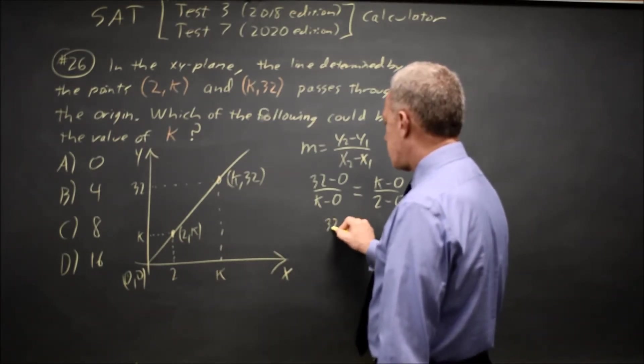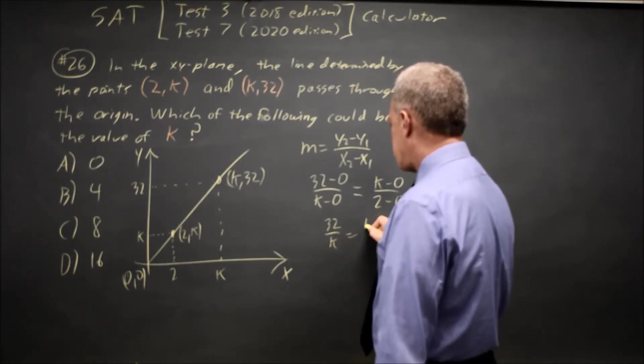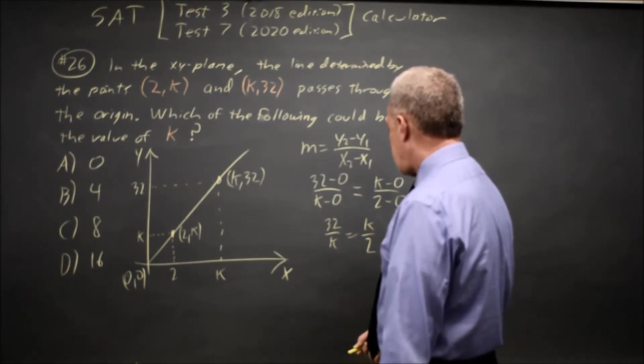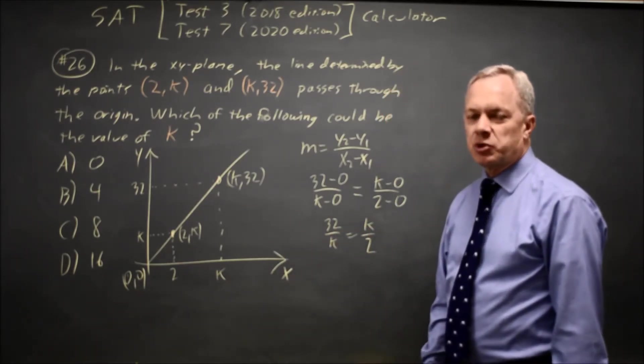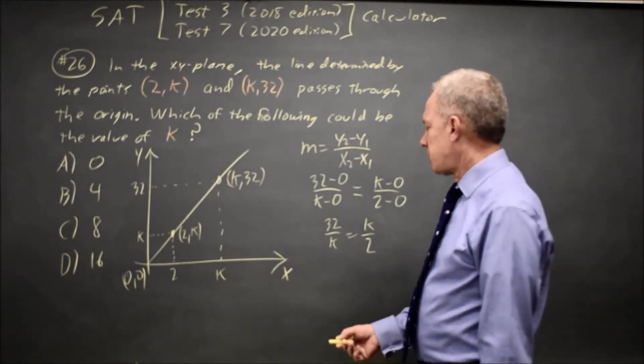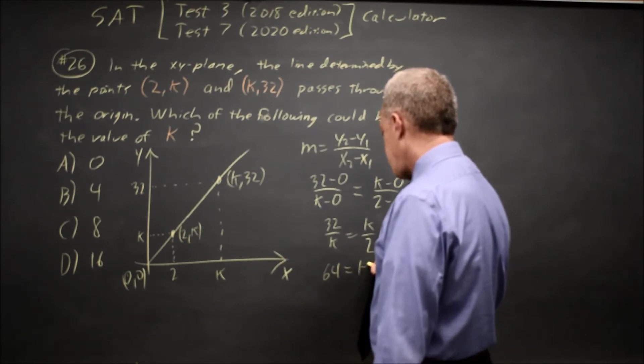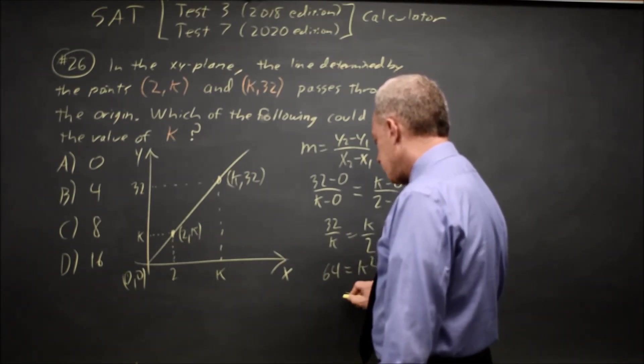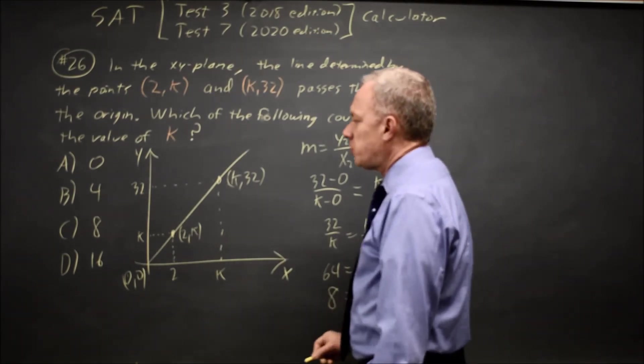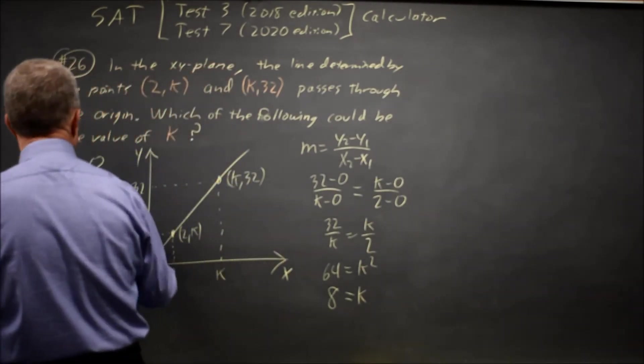This simplifies to 32 over k equals k over 2. And we're good at this particular equation because we cross multiply. So that gives us 2 times 32 is 64 equals k squared, or k equals plus or minus 8. And I'm going to go with positive 8 because that's one of our answer choices.